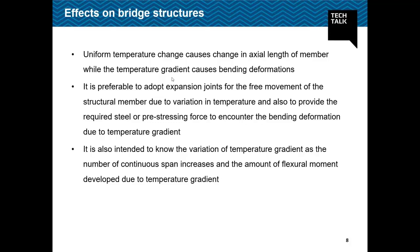Uniform temperature causes a change in the axial length of the member, while temperature gradient causes bending deformation. If longitudinal expansion due to uniform temperature is prevented, the girder may experience considerable axial force leading to structural damage and cracks. It is therefore preferable to provide expansion joints for free movement of structural members due to temperature variation, and also to provide required steel reinforcement or prestressing force to counteract bending deformation due to temperature gradient.